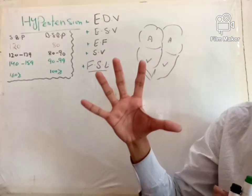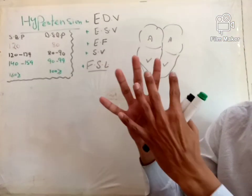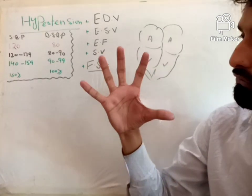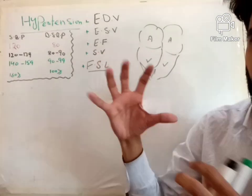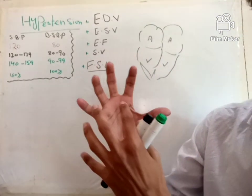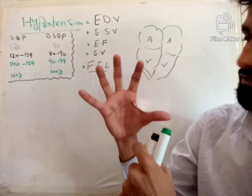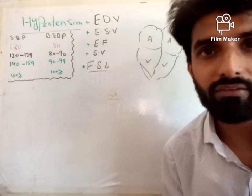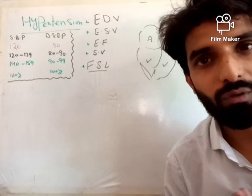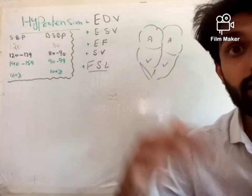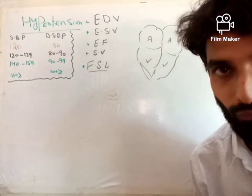Obviously, at the end of diastole, it's time for contraction. So just before the contraction — at the end of diastole, just before systole — the amount of blood present in the heart is called end diastolic volume.